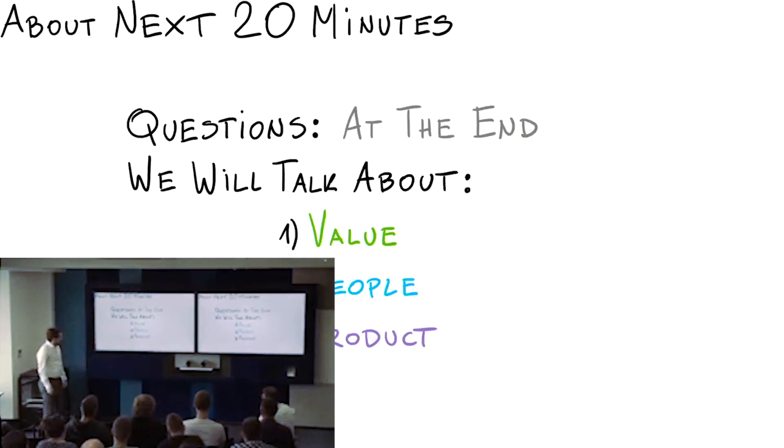First is value, second is people, and third is product. Let's start with value.